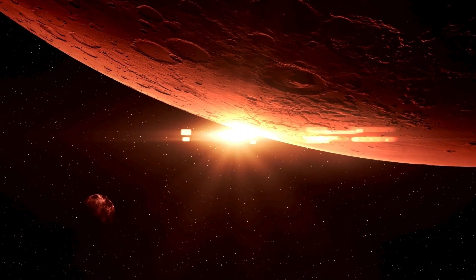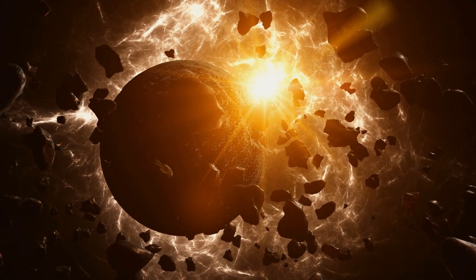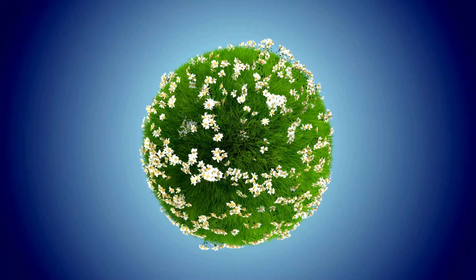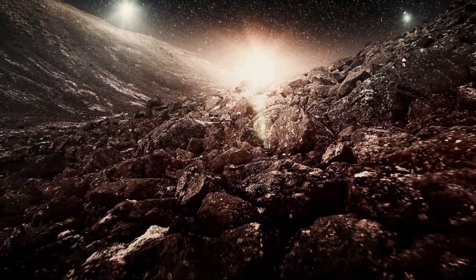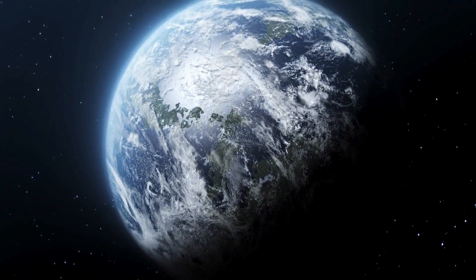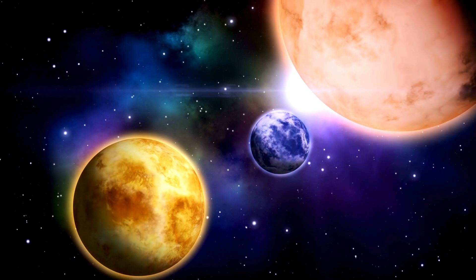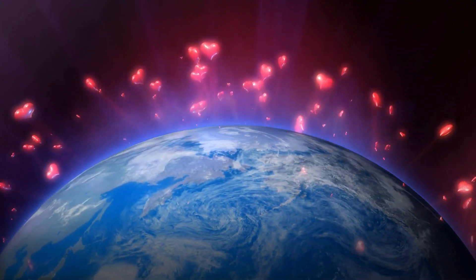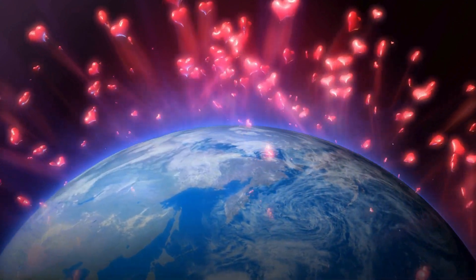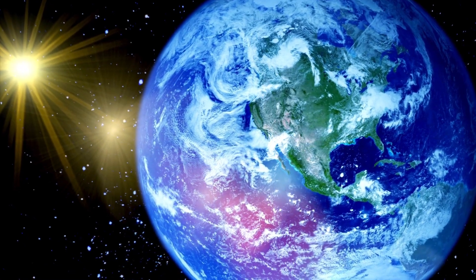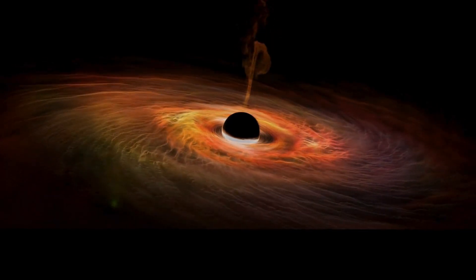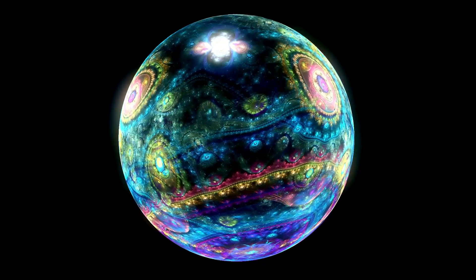At the same time, the gravitational turmoil will cause changes in the orbits of existing stars. Stars that were previously in stable orbits around the center of the Milky Way or Andromeda will be thrown into new, more elliptical paths, or potentially flung out of the merging system entirely. Some stars may find themselves ejected into intergalactic space, becoming rogue stars no longer bound to any galaxy. This redistribution of stellar material will contribute to the formation of new cosmic structures.